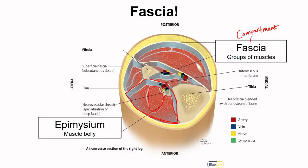Fascia as a word is used to describe many different things, from subcutaneous tissue to this thick compartment fascia to the fascia surrounding all of the layers of the muscle. So it is quite a broad umbrella term.